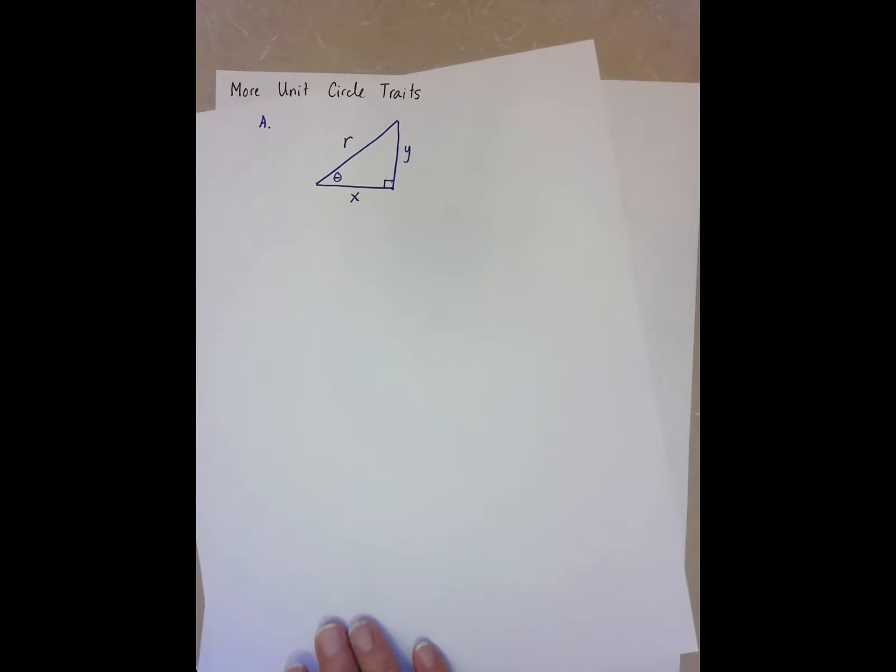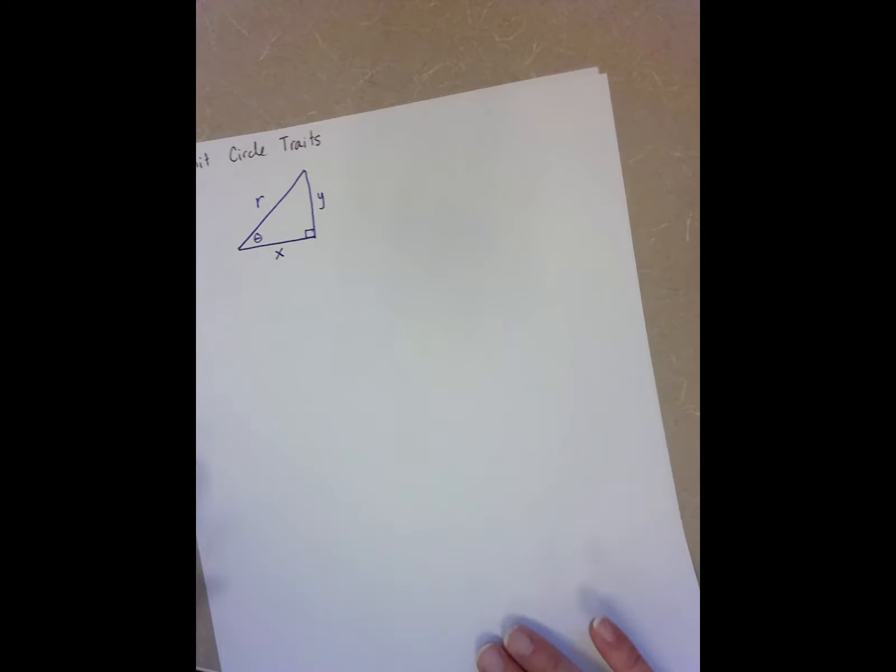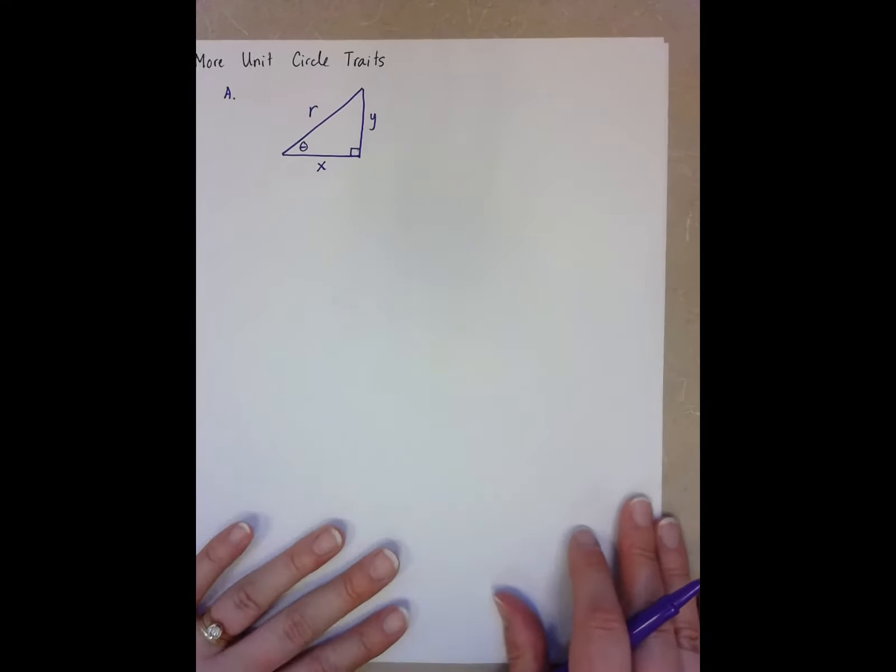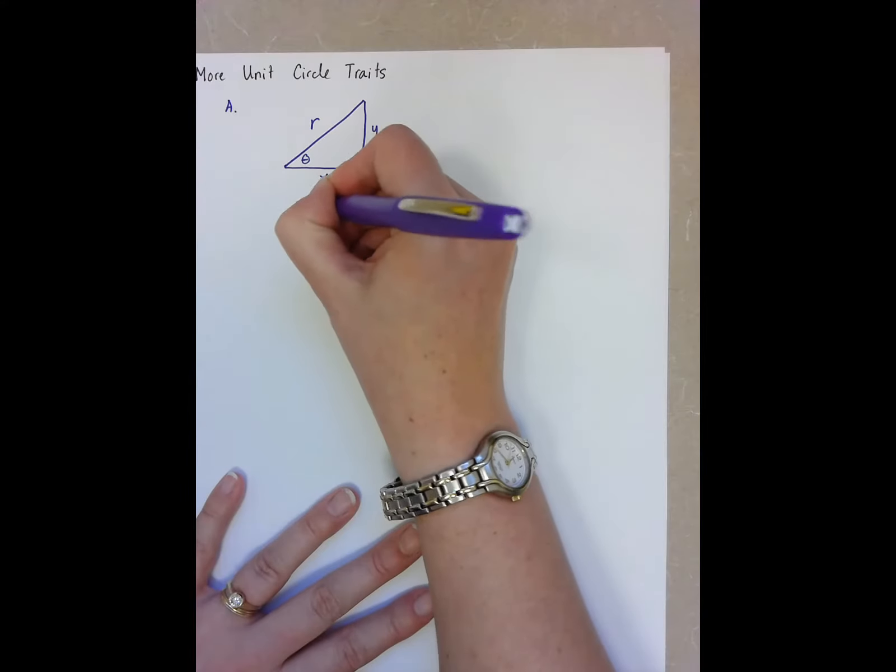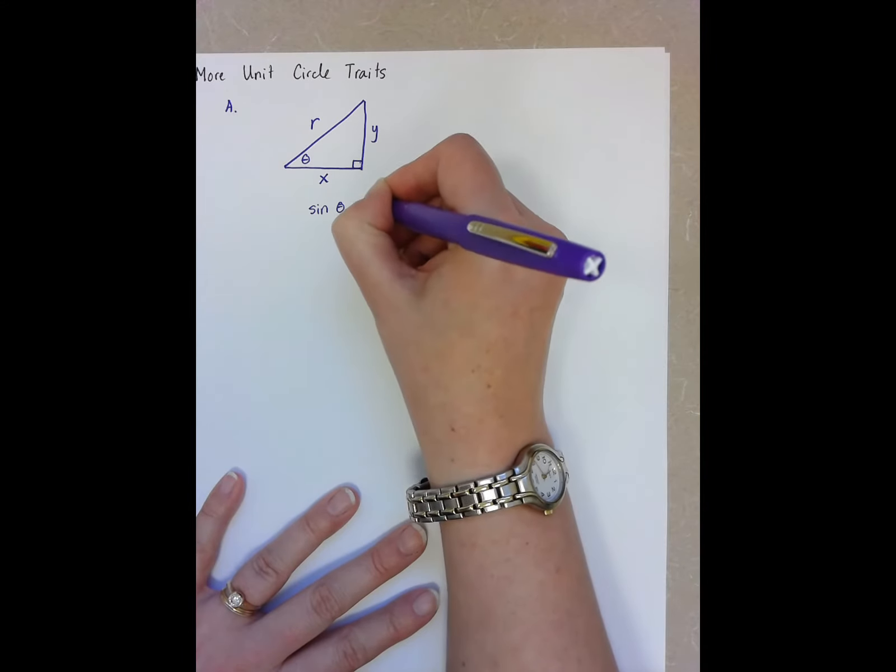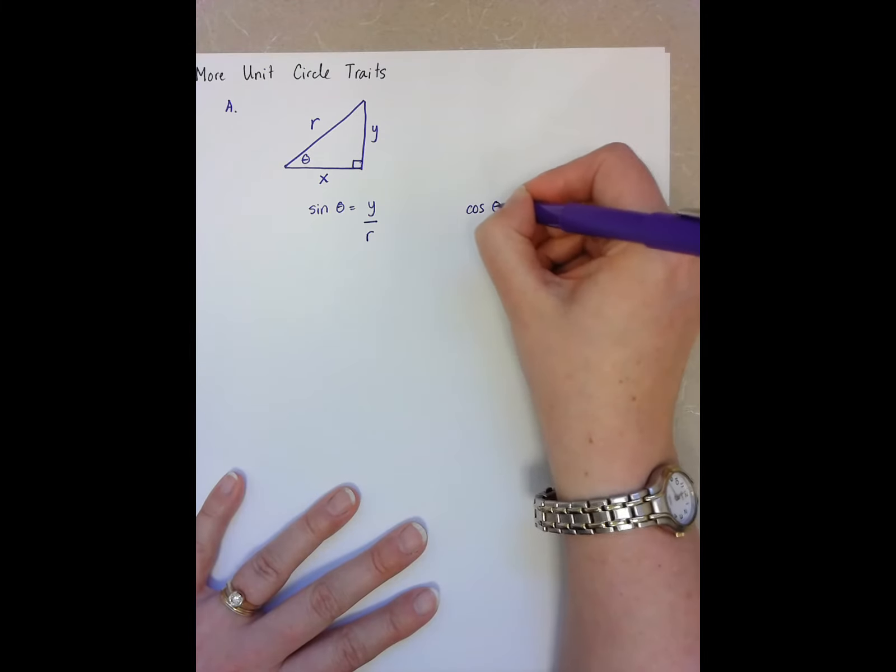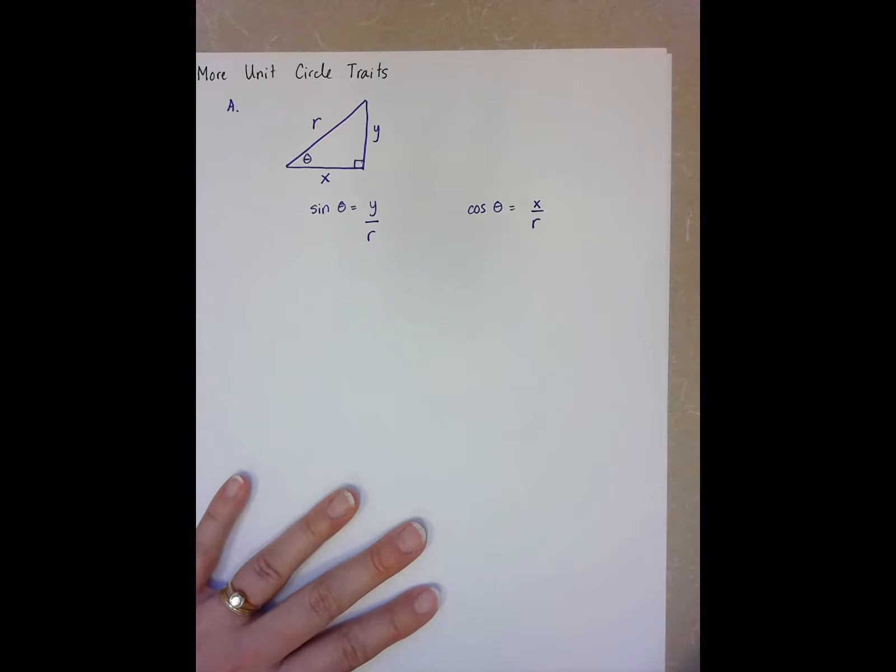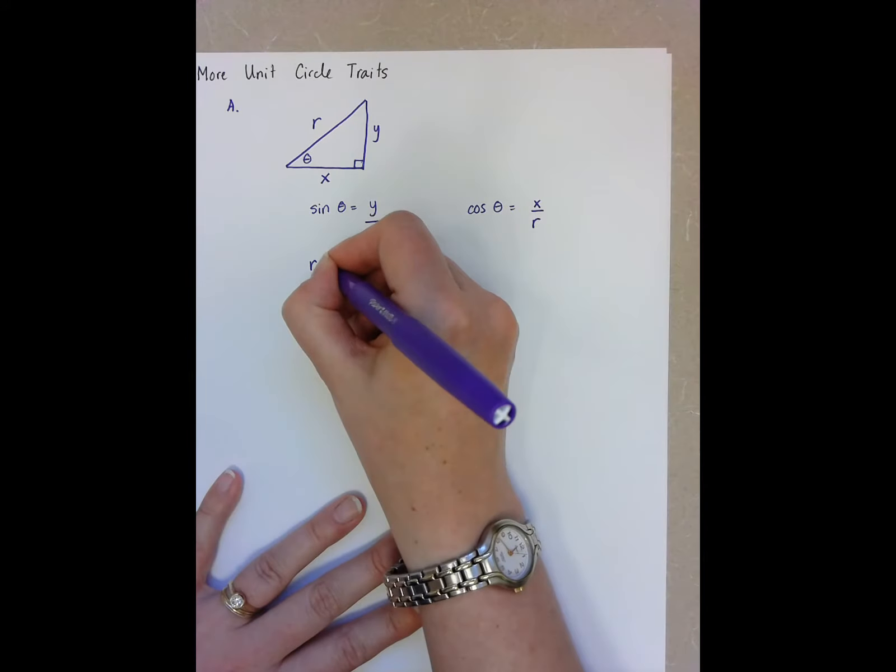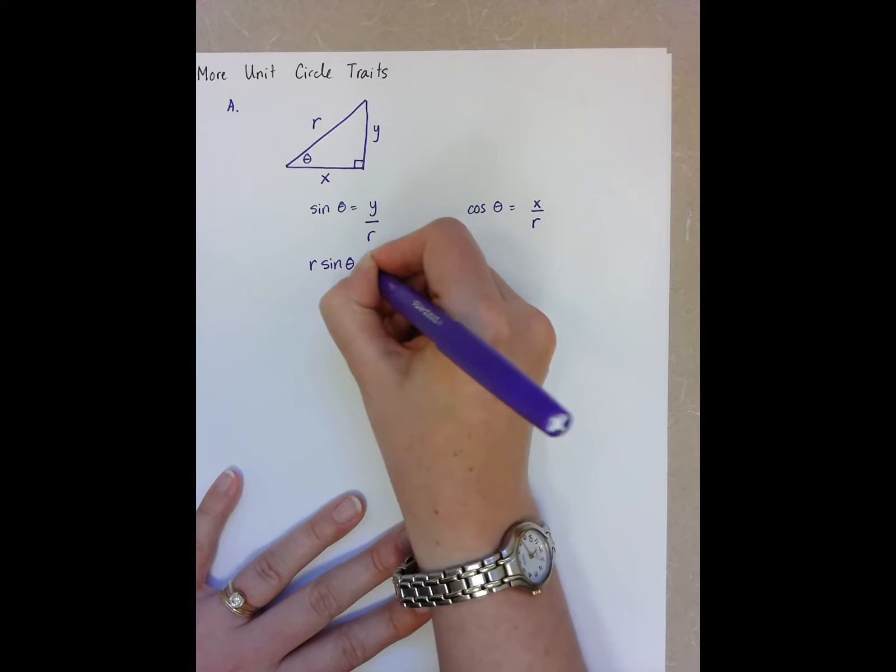So what we're going to do here is we're going to set up our trig ratios. We know that sine theta is opposite over hypotenuse and cosine theta is adjacent over hypotenuse. Now if I want to solve for x and y, I simply multiply by r.